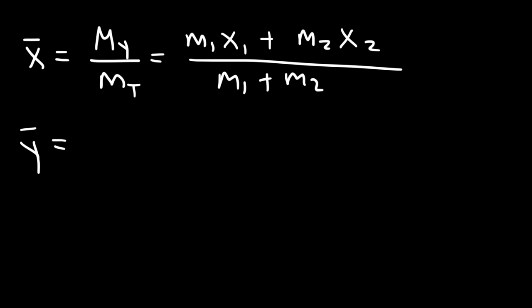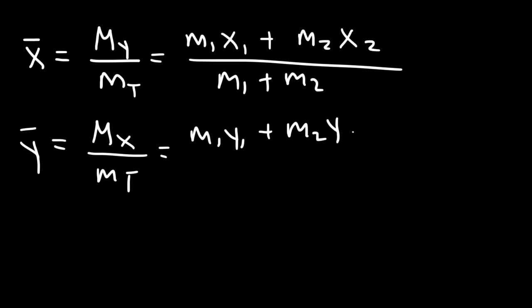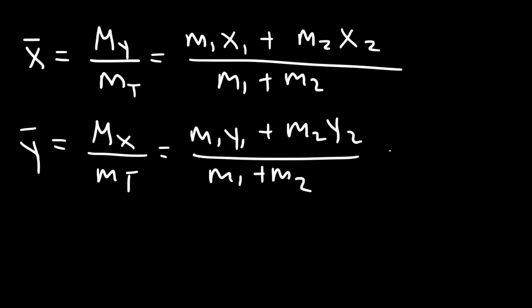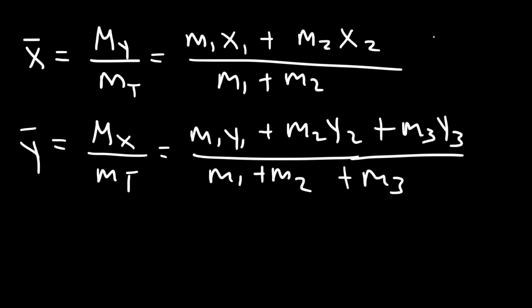The x-coordinate of the center of mass is the moment about the y-axis divided by the total mass, which equals m1·x1 plus m2·x2 over m1 plus m2. The y-coordinate of the center of mass is the moment about the x-axis divided by the total mass, which equals m1·y1 plus m2·y2 over m1 plus m2. This can continue for additional particles.